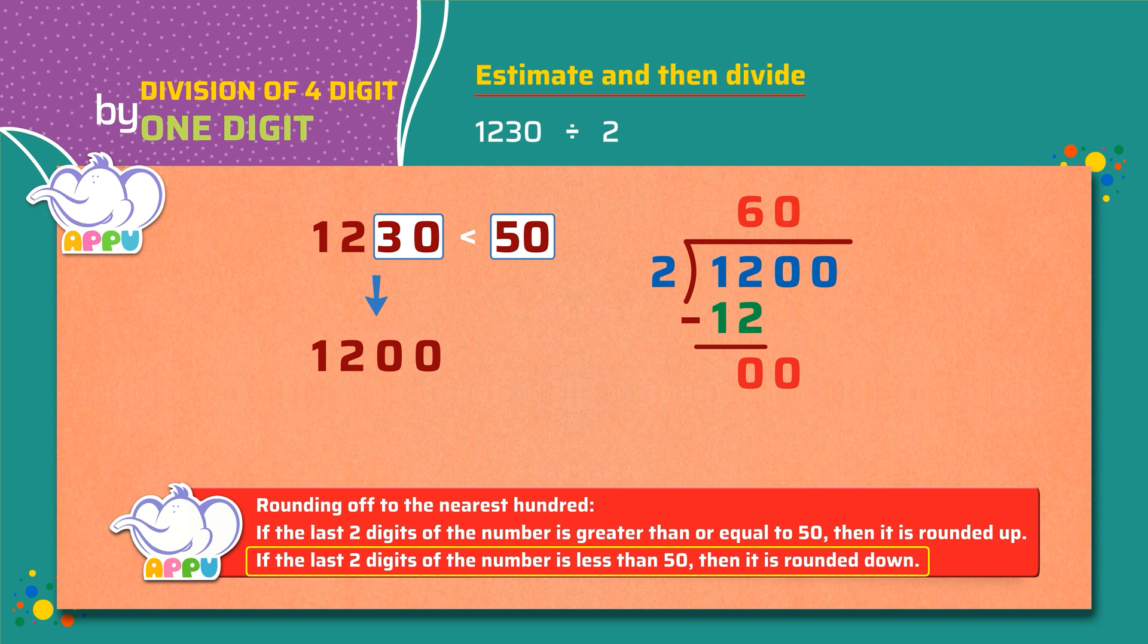Next, we bring down the number in ones place which is 0. So the number now is 0. We cannot divide 0. So we write 0 to the quotient.